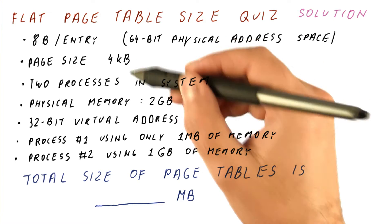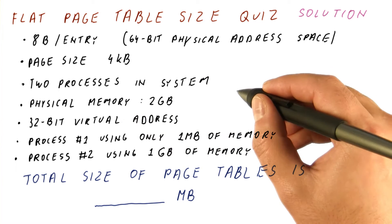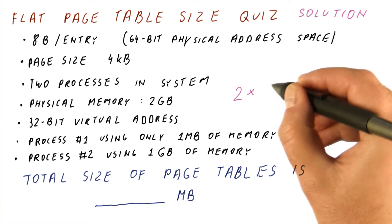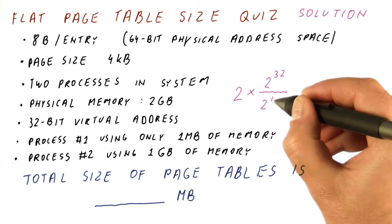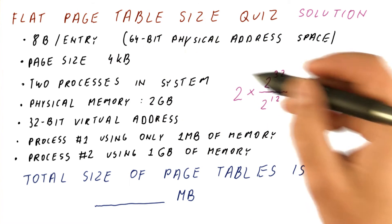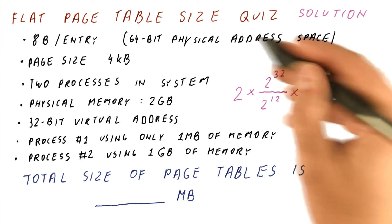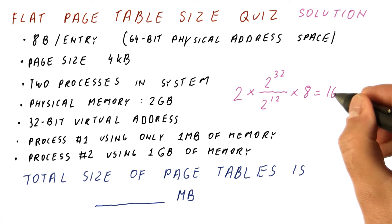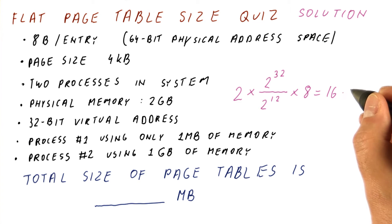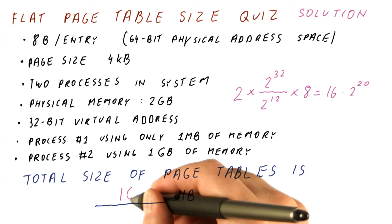The page size is four kilobytes, and the applications have a 32-bit virtual address space. So we have two processes times 2^32 bytes of address space divided by 2^12 bytes in a page — this gives us the number of pages — times the size of an entry, which is eight bytes. That gives us two times eight, which is 16 times 2^20, and since 2^20 bytes is a megabyte, we have 16 megabytes.